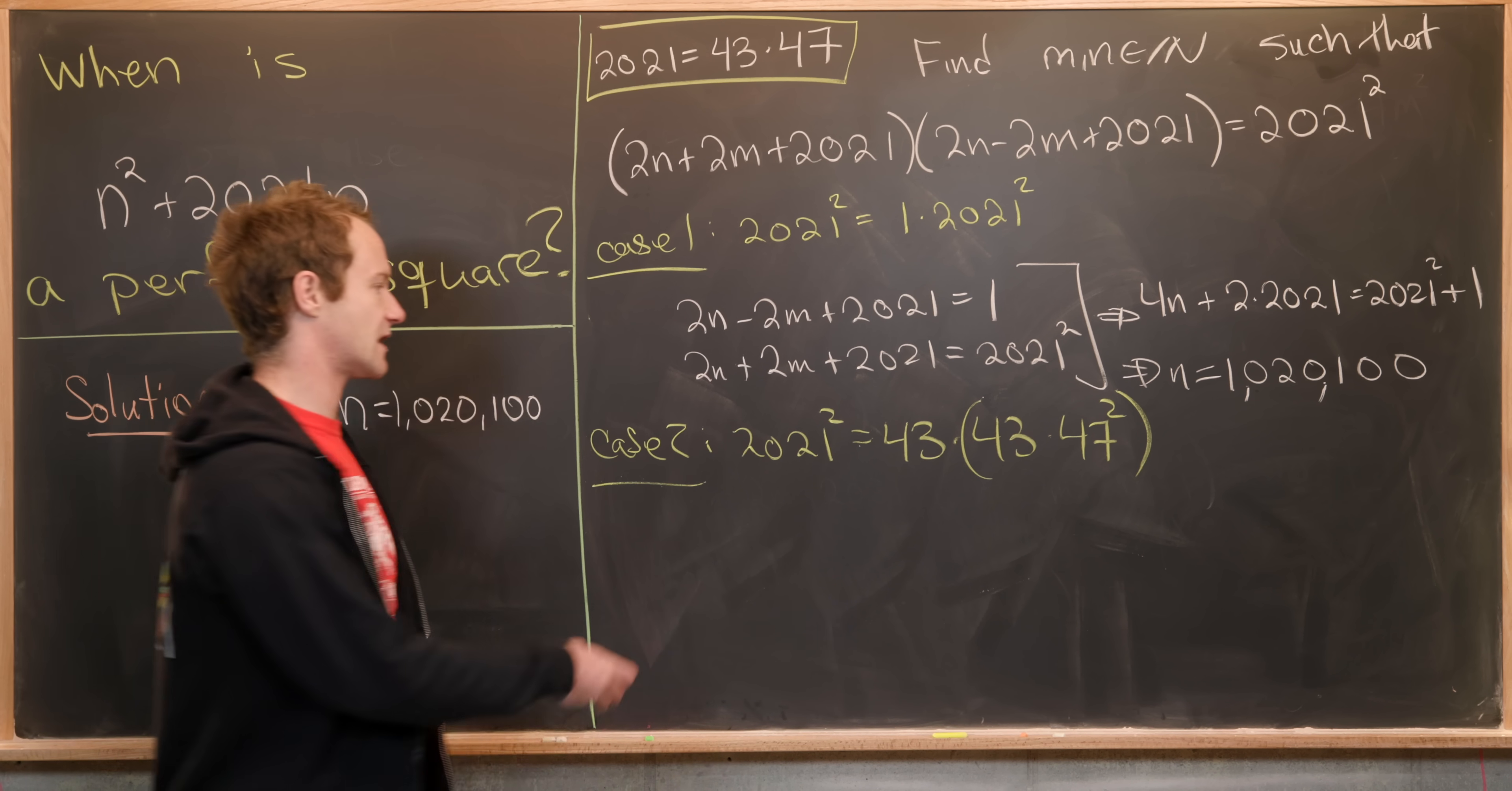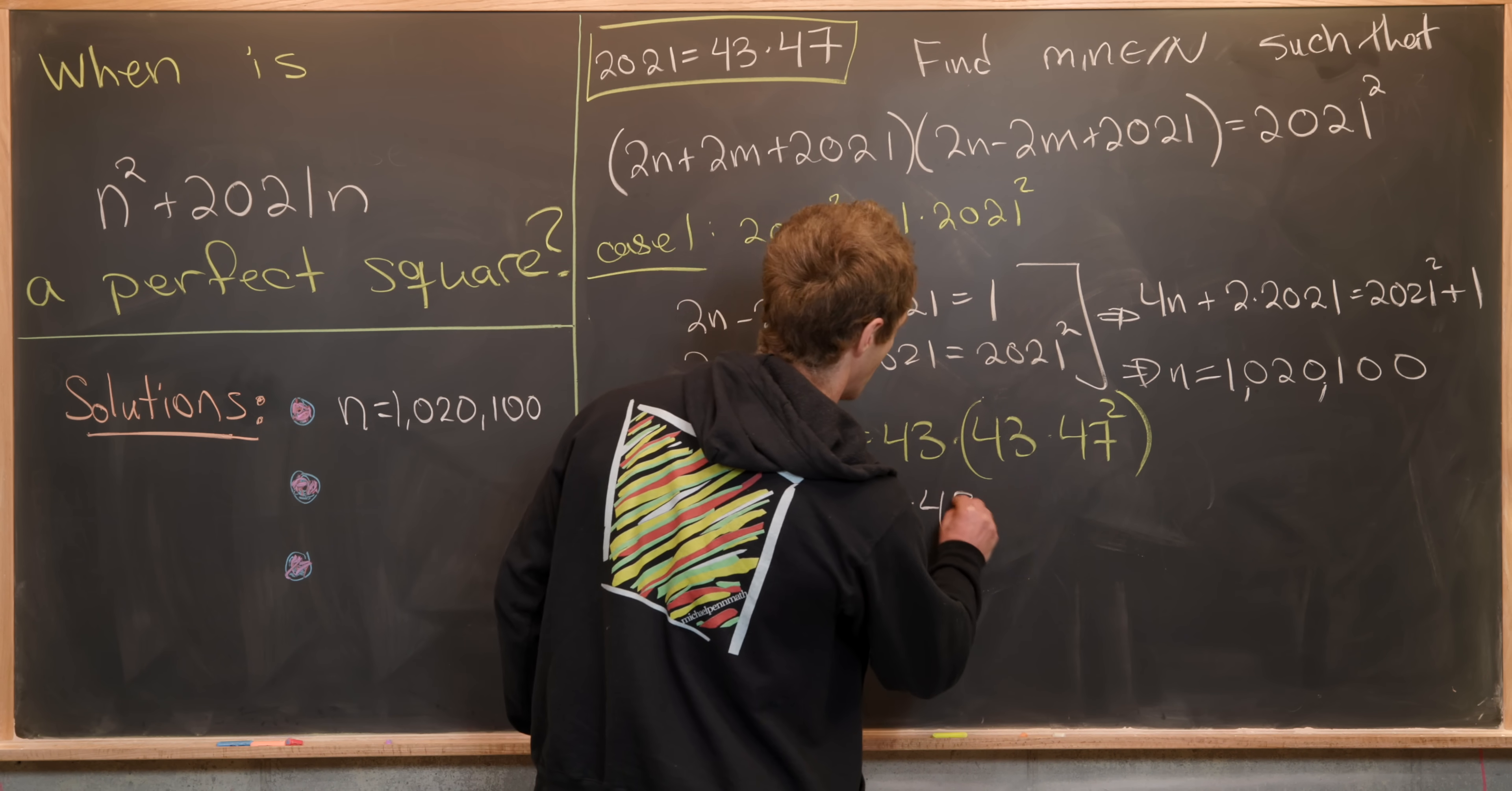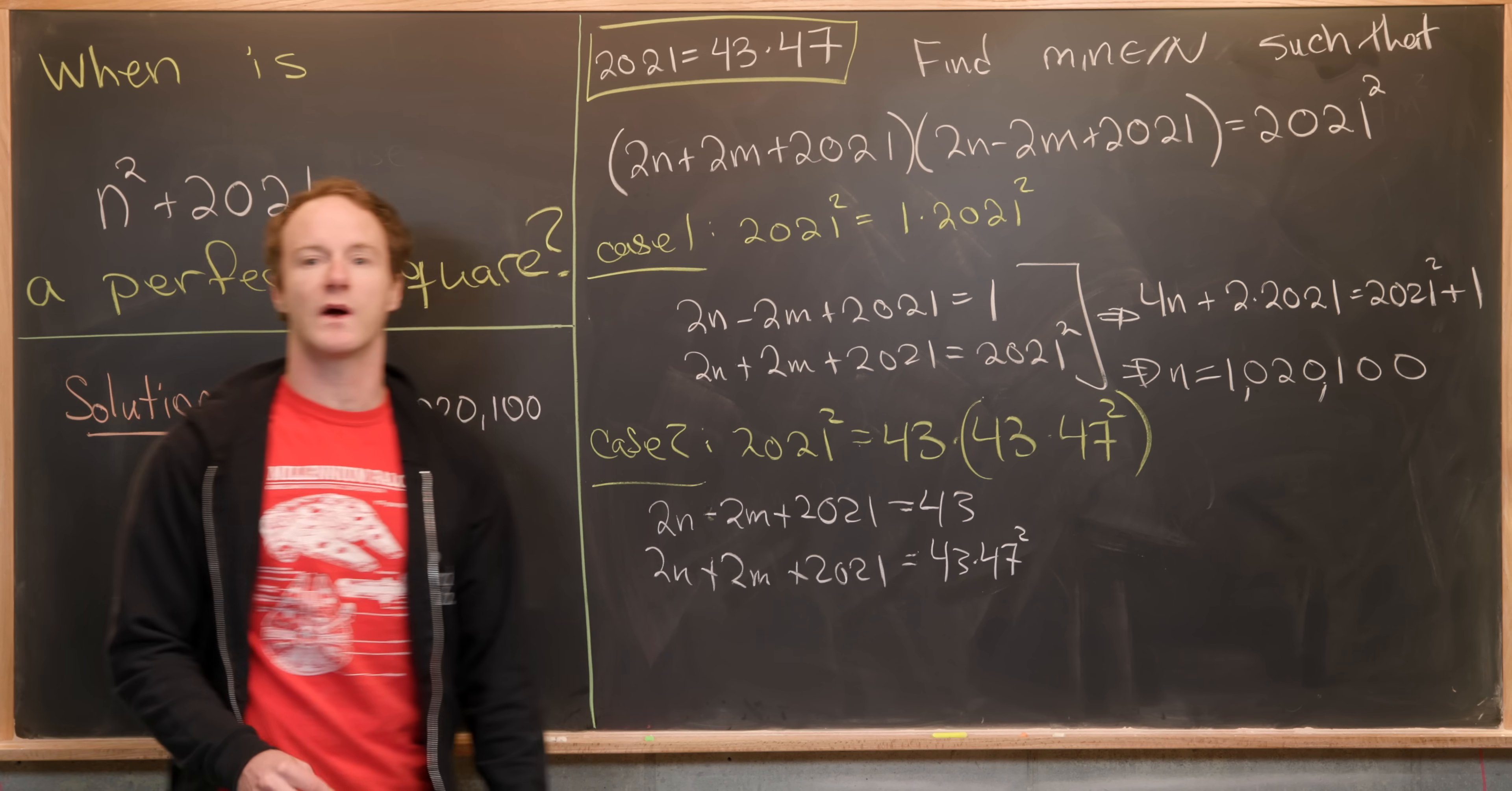So again, we know which one is going to play the role of the smaller factor. It'll be this one on the right. So that'll give us our system of equations: 2n - 2m + 2021 = 43² and 2n + 2m + 2021 = 43(47²).